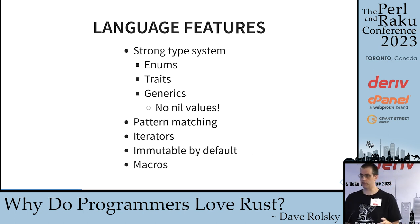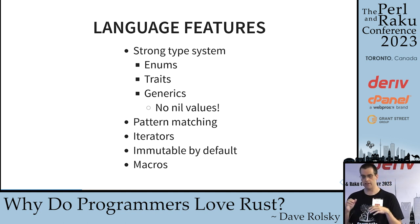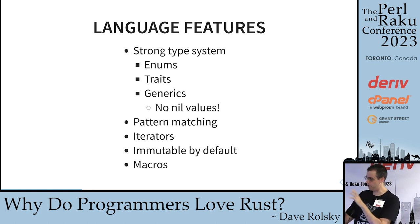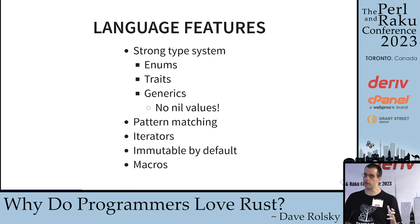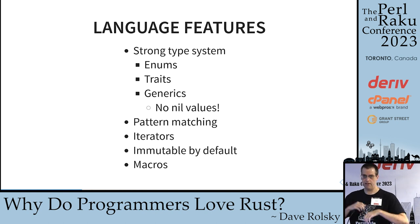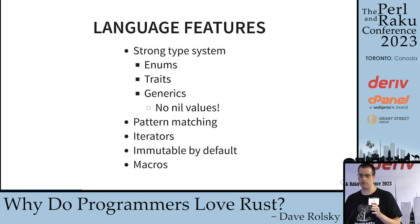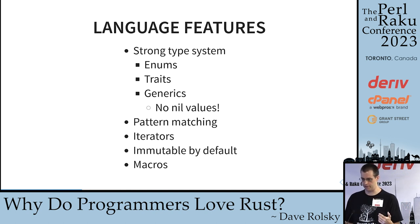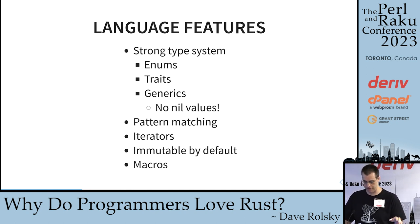Some of the language features include a pretty strong type system. It has enums — we'll go into that — traits, generics, but there are no nil values. I put that under generics because generics are what enable not having nil values. It has really cool pattern matching, iterators are built in, and things are immutable by default — unless you declare a variable as mutable, it is immutable. It also has a pretty powerful macro system.